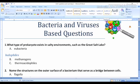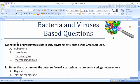The first question: what type of prokaryote exists in salty environments, such as the Great Salt Lake? Salty environment is the key word. Yes, salty means halo. So, the answer simply is halophiles. And halophiles, methanogens, and thermoacidophiles are kinds of archaebacteria.